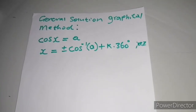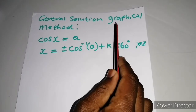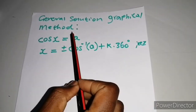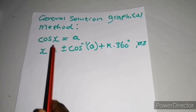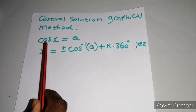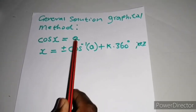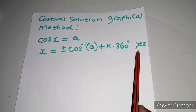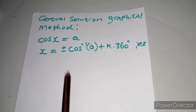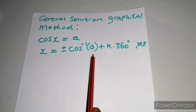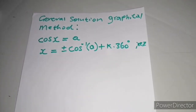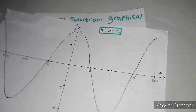Boys and girls, we are continuing with general solution, but this time going to learn the graphical method. So if you are given an equation about cosine and you rearrange such that we have the cosine of an angle equal to a value, we can simply use this form. I'm going to show you exactly where this form is from — we're going to use this through understanding. This form is from the mother graph of the cosine.